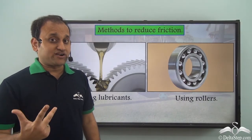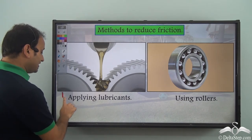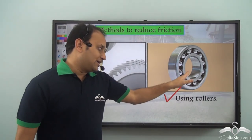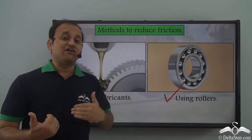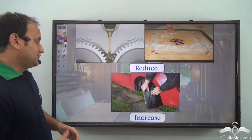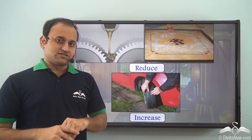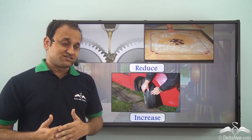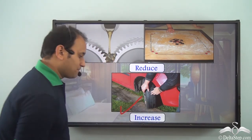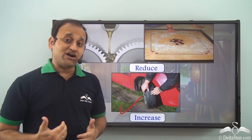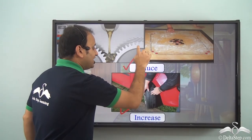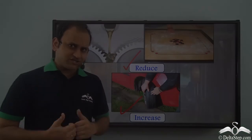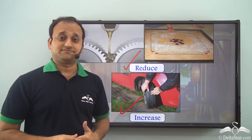So the two most important methods of reducing friction are applying lubricants and using rollers. By either applying lubricants or using rollers, we can reduce friction and make our work much easier. We have friction all around us — sometimes it is advantageous and sometimes it is disadvantageous. When it is advantageous we increase friction, and when it is disadvantageous we reduce it, making our work easier.